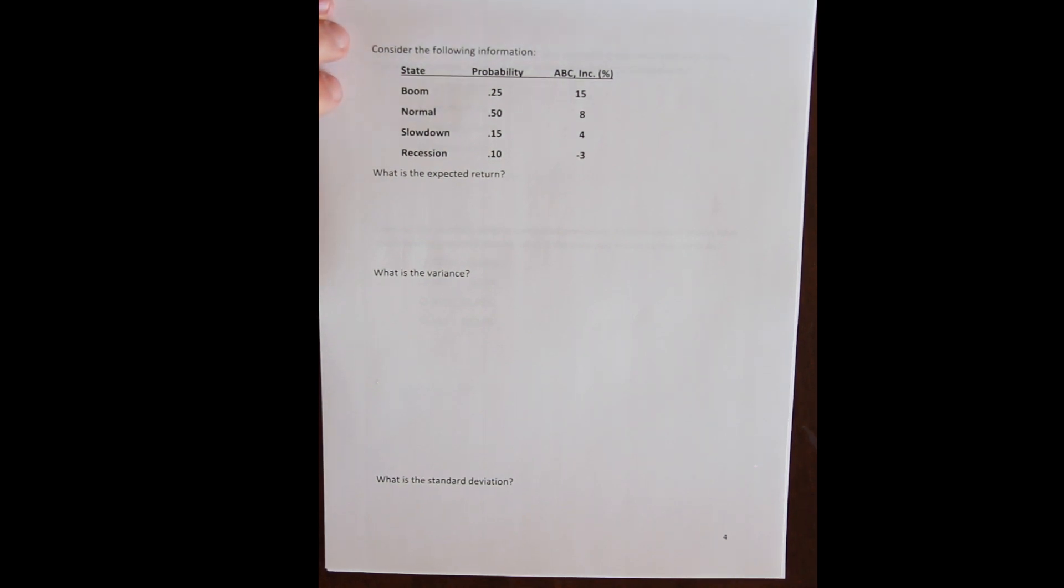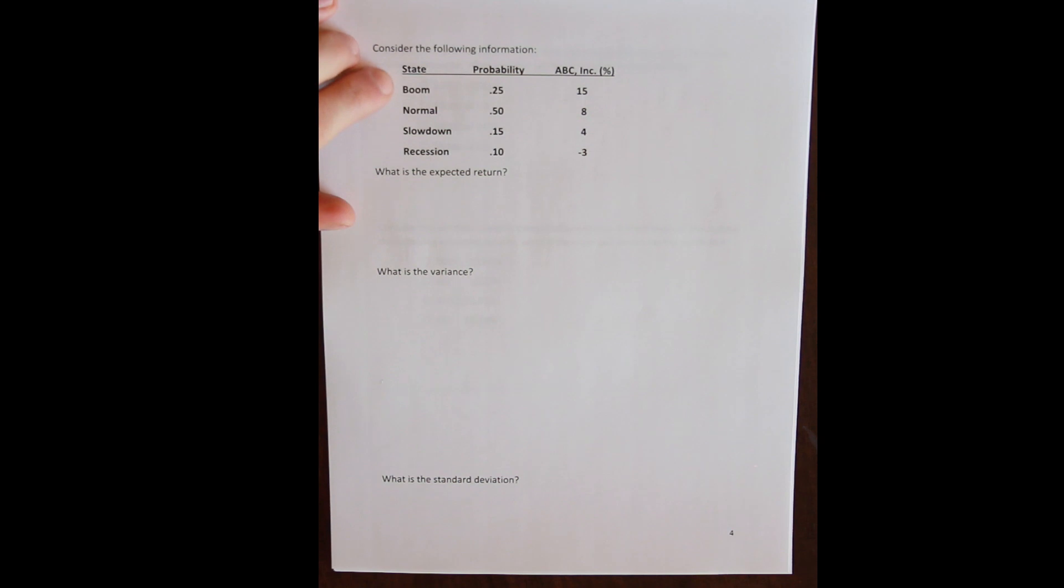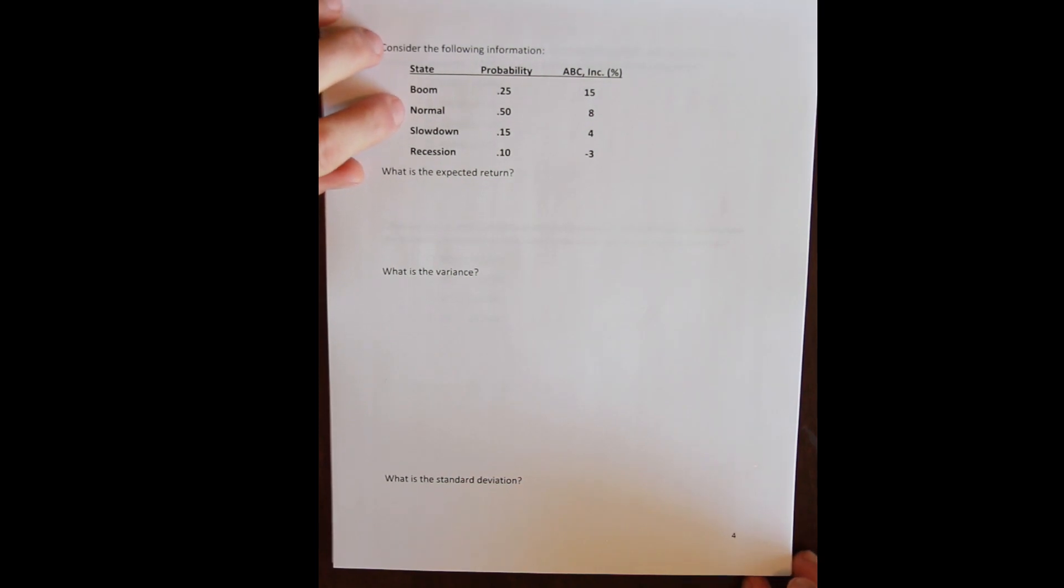Hopefully this isn't scary by now if you've watched the first two examples. We now have a world where there are four possible states: boom, normal, slowdown, and recession. So good, average, slightly bad, and then bad. Of course, this isn't even close to real world. In the real world there are an infinite number of possible futures, but for us we are going to have a discrete set of potential outcomes.